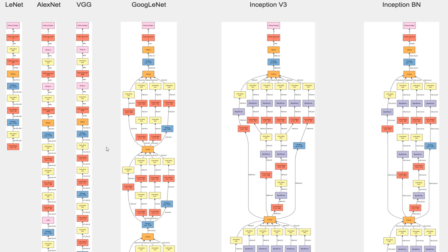This is a very busy image, but I put it together so you can see some of the famous architectures out there. You've probably heard of AlexNet and VGG. Before those, LeNet was quite famous, and then GoogLeNet, which is a bit more complicated. Inception V3 and Inception BN are more recent ones, both by Google. As you can see, there are different architectures, and no single architecture is great for all types of problems.